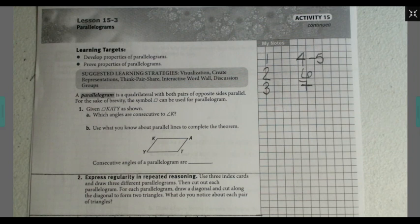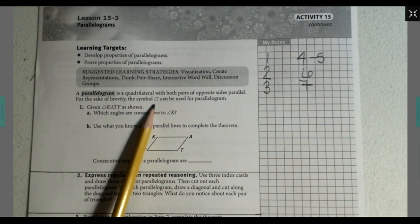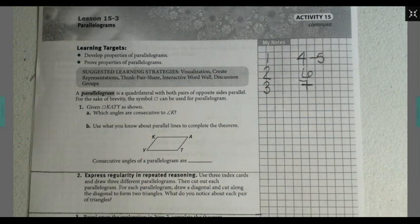On the previous slide you should have seen the paragraph that says a parallelogram is a quadrilateral with both pairs of opposite sides parallel. For the sake of brevity, the symbol, the slanted rectangle, can be used for parallelogram.